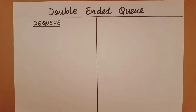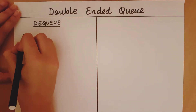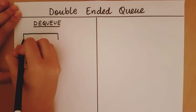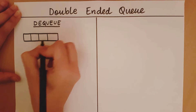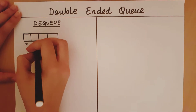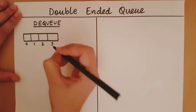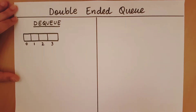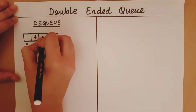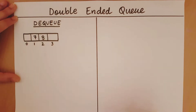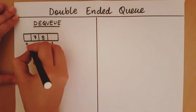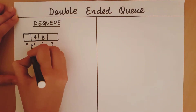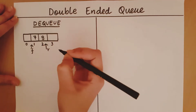Let me explain this with an example. Let's consider a queue and look at its current state. When this is the status of the queue, the front will be at index 1 and the rear will be at index 2.